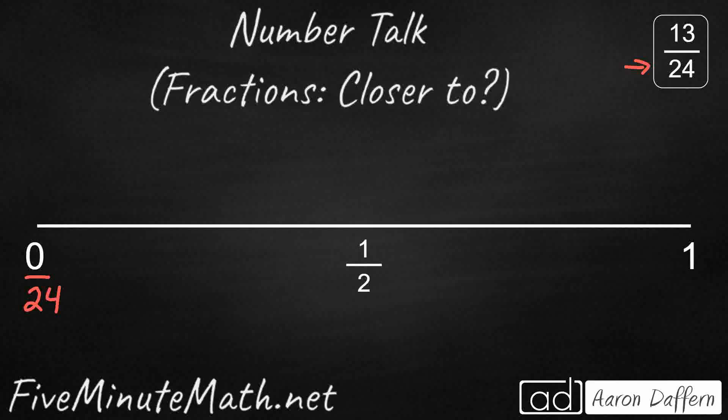And then one whole means I have all the pieces of that fraction. Remember, that fraction is split up into 24 parts. So all of the 24 parts would equal 1, because 1 whole is equal to any fraction that has the same numerator and denominator - 4 4ths, 5 5ths, 10 10ths, 100 100ths, or 24 24ths.